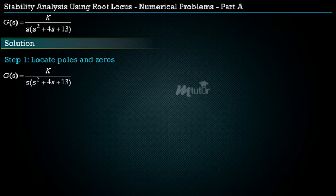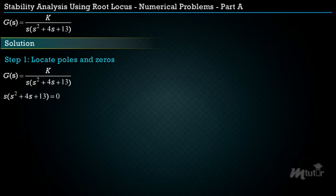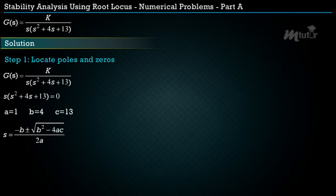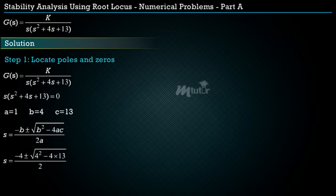The poles of the open-loop transfer function are the roots of the equation s(s² + 4s + 13) = 0. Here a = 1, b = 4, and c = 13. Using the quadratic formula and substituting the corresponding values, we get the roots as shown on the screen.